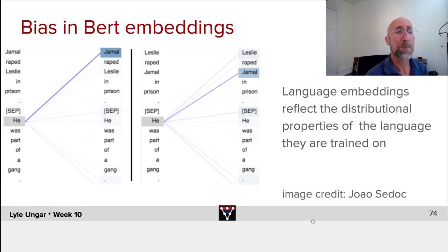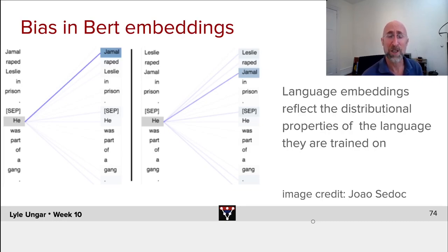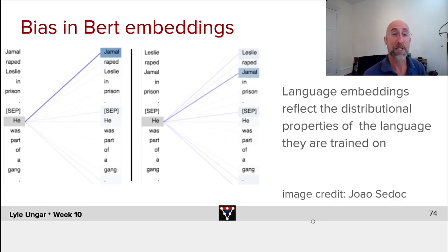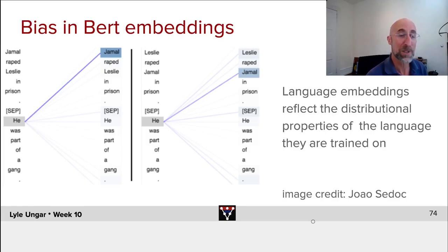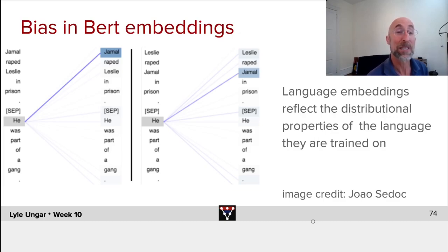Let's swap the sentence: say 'Leslie and Jamal.' Now 'he' attends mostly to Jamal — the victim, not the perpetrator. Why does BERT change behavior for these two quasi-interchangeable names? Jamal is much more of an African-American name. The model is assuming that Jamal is more likely to be part of the gang — that black names are more associated with gangs than white names like Leslie.